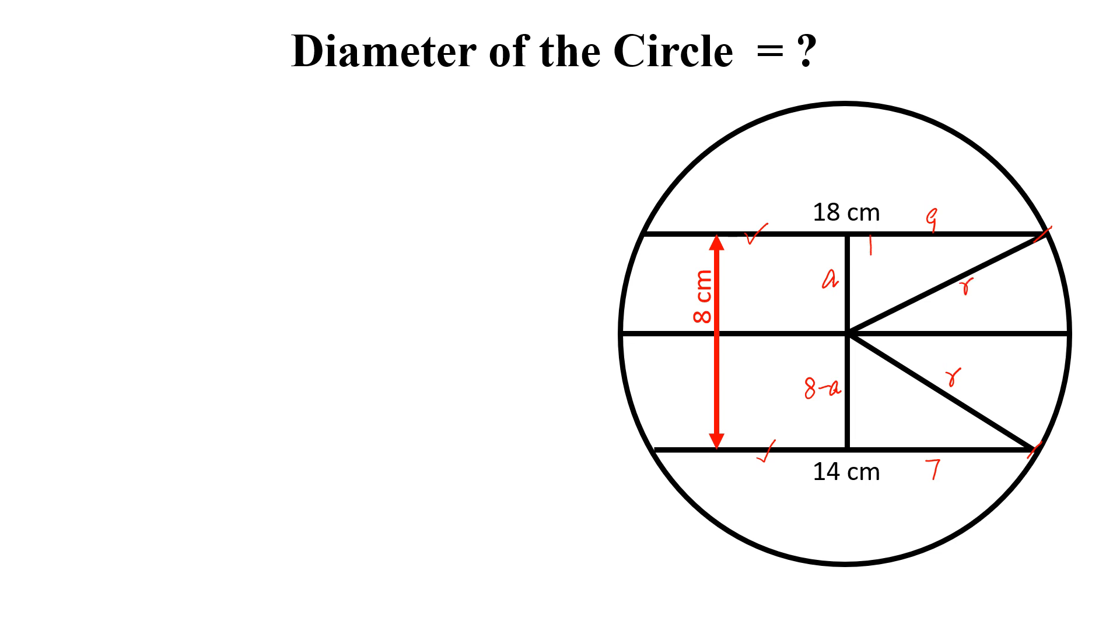Now these both are right angle triangles. So we can write a square plus 9 square equal to r square. Let this is equation 1. Similarly, we can write 8 minus a whole square plus 7 square equal to r square. Let this is equation 2.